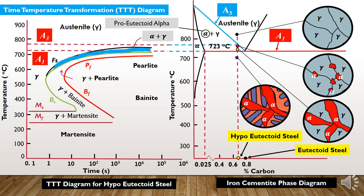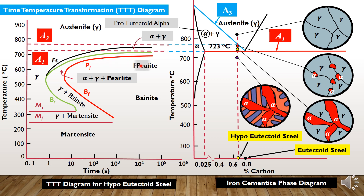The region between the Fs curve and the green line — which indicates the start of pearlitic transformation — becomes the alpha plus gamma region. The region next to it will also contain pearlite, and the upper half region between the red and green lines will consist of three phases: pro-eutectoid alpha plus gamma plus pearlite. Finally, after the finish of pearlitic transformation, we get pro-eutectoid alpha plus pearlite.